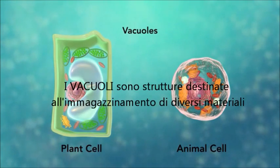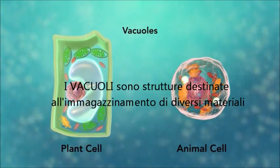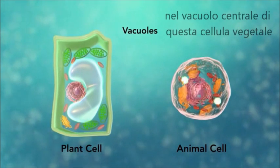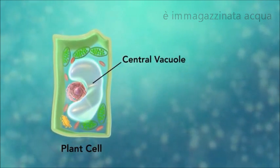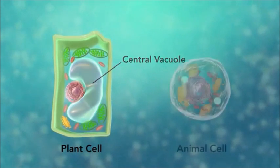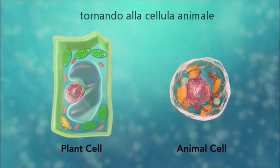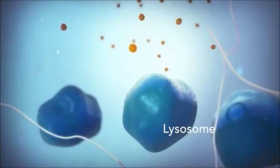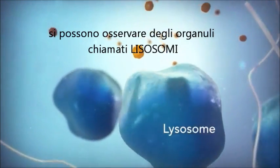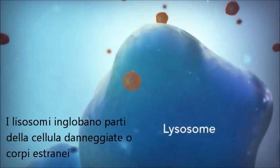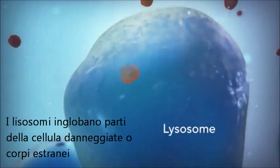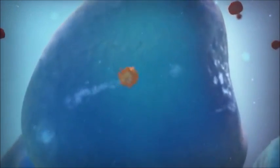Vacuoles are sac-like structures that store different materials. Here in this plant cell, the central vacuole stores water. Going back to the animal cell, you will see an organelle called a lysosome. Lysosomes are the garbage collectors that take in damaged or worn-out cell parts. They are filled with enzymes that break down this cellular debris.